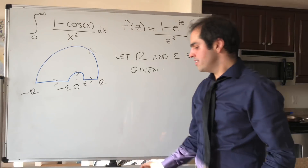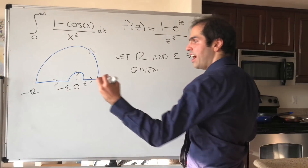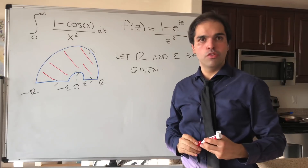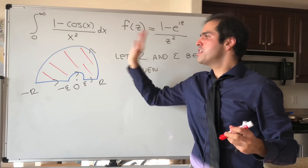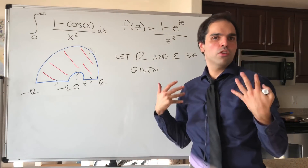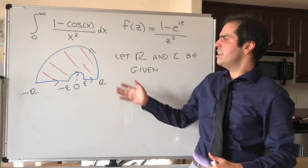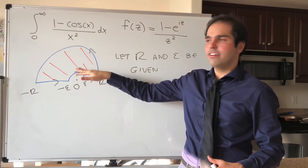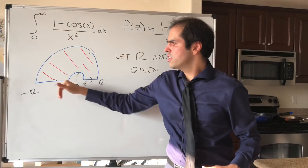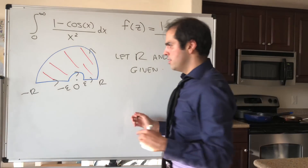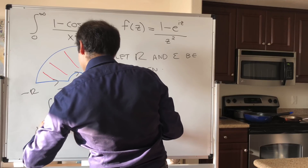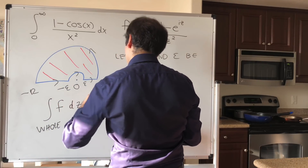Notice inside this region, f is perfectly smooth — it has no singularity and is defined everywhere in this region. So there's this beautiful theorem called Cauchy's theorem, which says that if f has no singularity in this region, then the whole integral over this whole curve is just zero. So the integral of f over the whole contour dz equals zero.